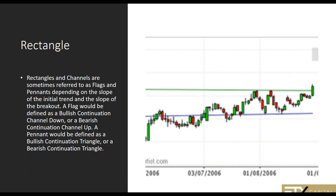Rectangles and triangles are sometimes referred to as flags and pennants. I just stick with rectangles and channels because they are exactly what I see. A flag is called a bullish continuation channel down or a bearish continuation channel up. A pennant is defined as a bullish continuation triangle or a bearish continuation triangle, depending on whether the price is moving up or down.